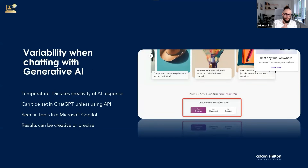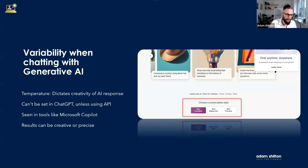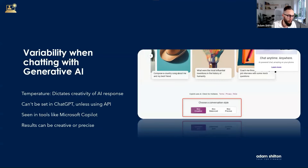There's a term when using large language models called temperature. Temperature dictates how creative or precise you want the response from the AI to be. You can't set this in ChatGPT — the temperature is automatically set for you. But you may have seen in tools like Microsoft Copilot something called conversation style: creative, balanced, or precise. This is where you can manually set the temperature based on how accurate you want the response to be. Precise means less variability; creative means more variability.